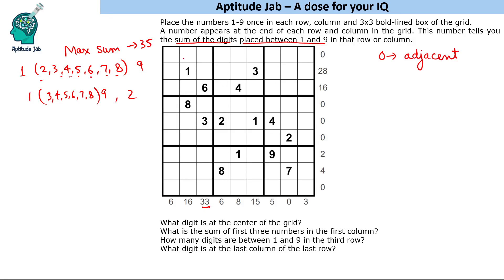Let us look at the numbers given to us. We have a clue of 0, which means 1 and 9 are adjacent. We cannot have 9 on one side, so 9 will come on the other side. The first question asks what digit is at the center of the grid — that is 9. Then we have 1 and 9 with difference 2, so 2 will be placed there.